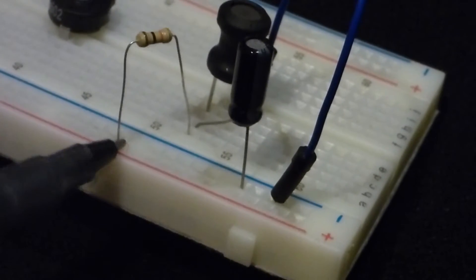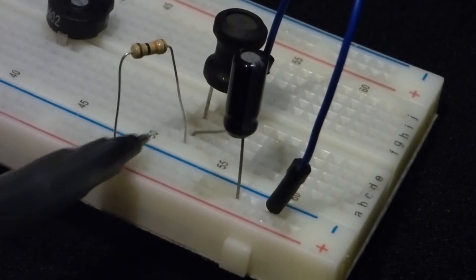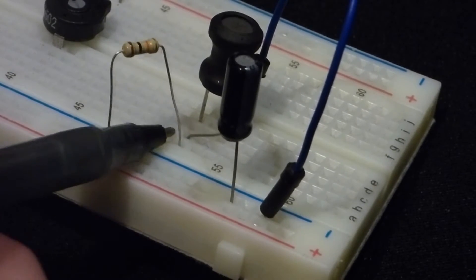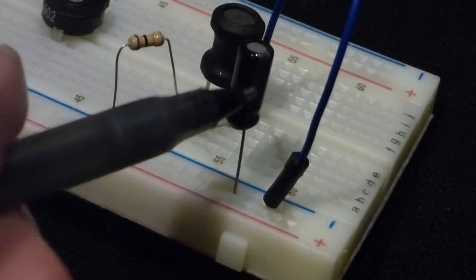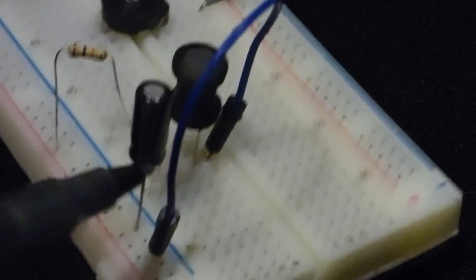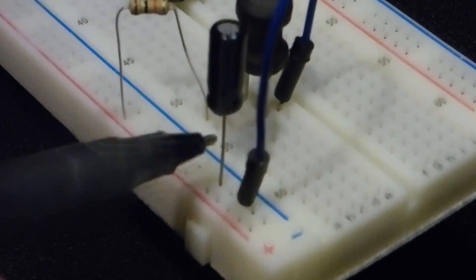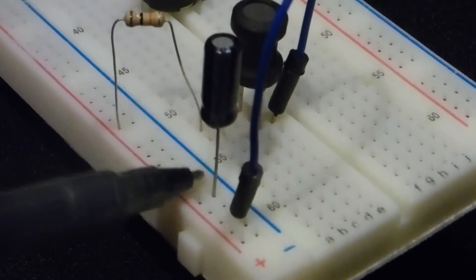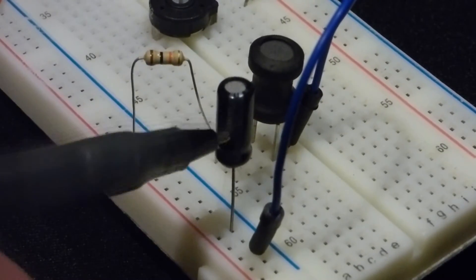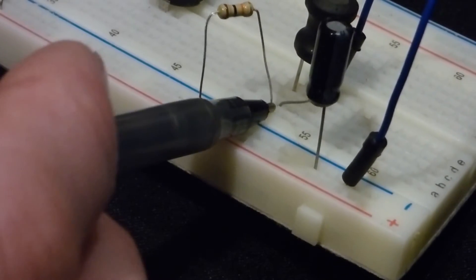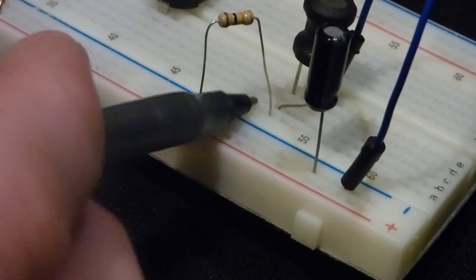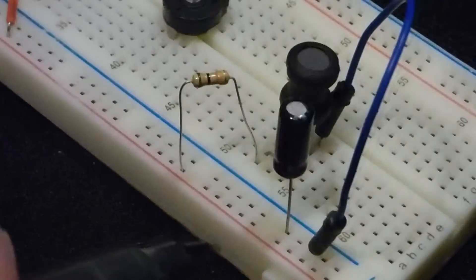So now we have one end of the resistor on the positive rail. The other end connects to one end of both the capacitor and the inductor. This is a polarized capacitor. There's a gray stripe here that's not showing up on the camera very well, but that gray stripe with the little black dashes means this side needs to be more negative at all times.